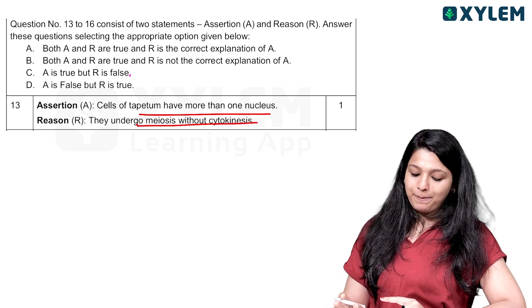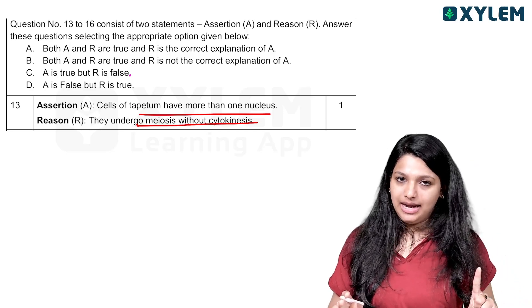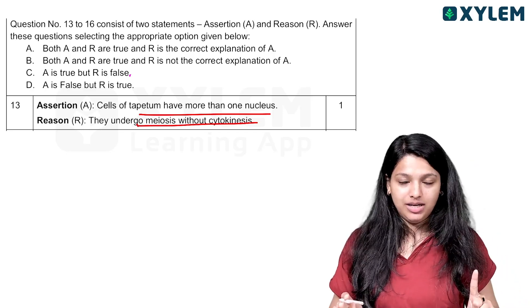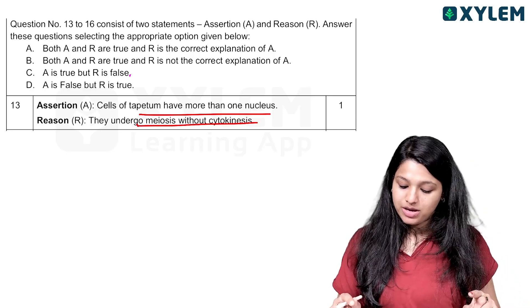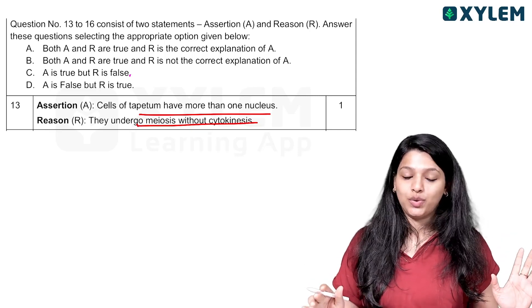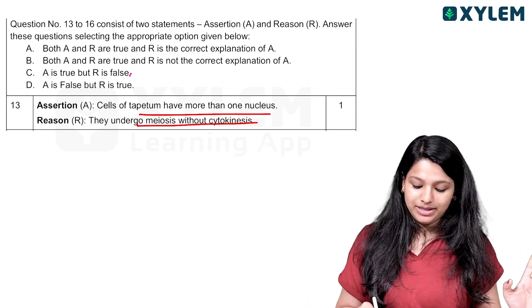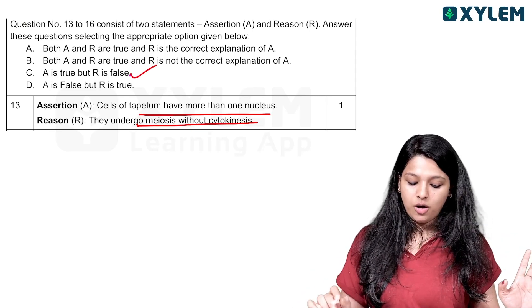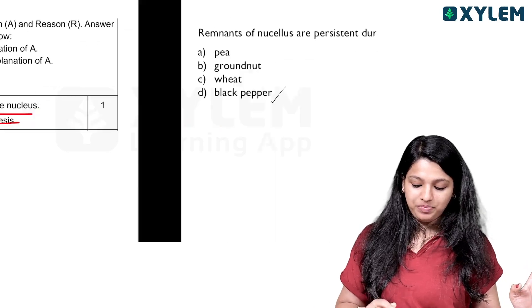Cells of tapetum have more than one nucleus — that means they are multinucleated. Do they undergo meiosis without cytokinesis? No, not cytokinesis — so A is true but R is false. Option C is the correct option.